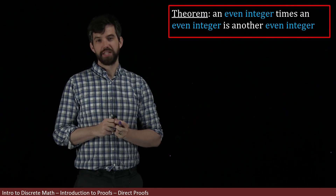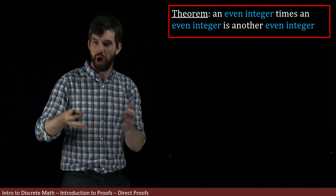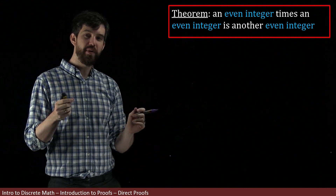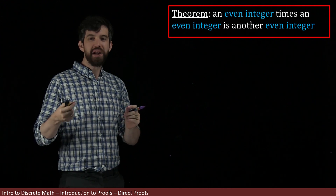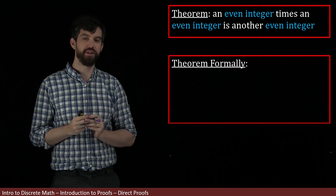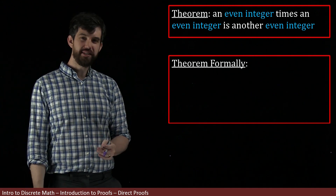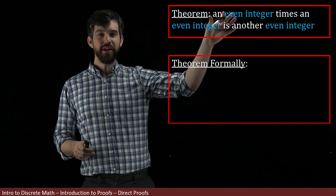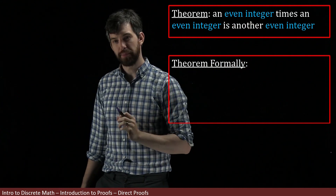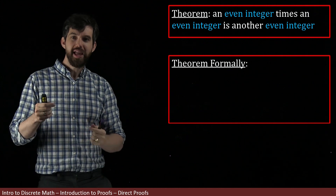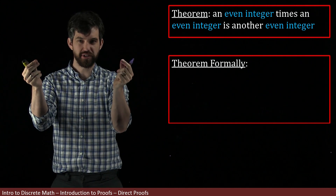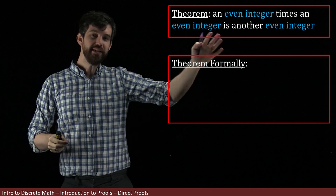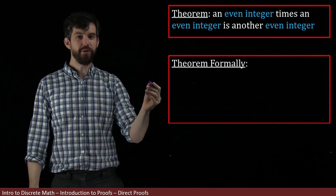Alright, so back to our theorem. Now we know what an even integer is, and we can always go back and recall that. My next point is that the theorem as written is a little bit informal, and I want to clean it up and say it in a more precise manner. The first thing to note is that there's a hidden universal in my informal presentation of this theorem — it says an even integer times an even integer is another even integer, but implicit in this phrasing is that every single time I find pairs of integers that are both even, their product is going to be even. Hidden inside of this is a for-all claim.